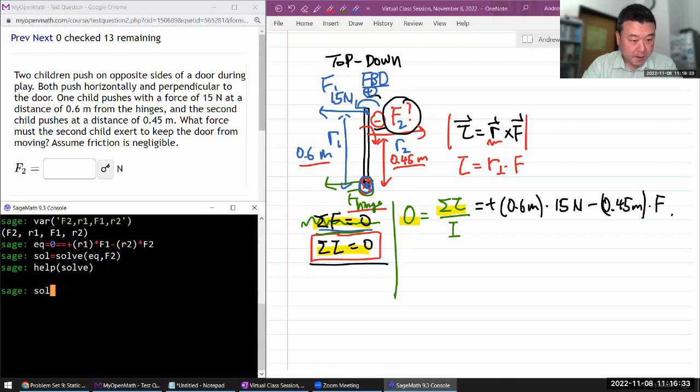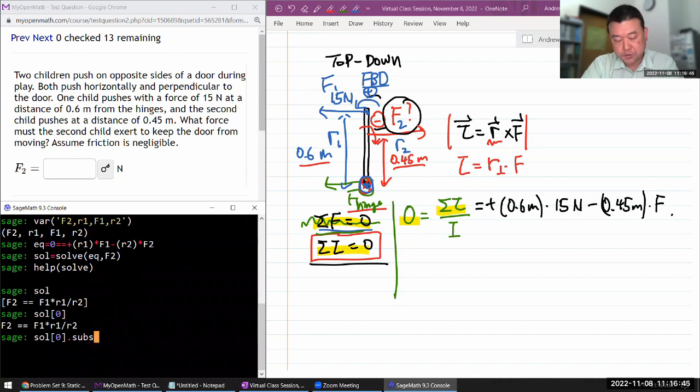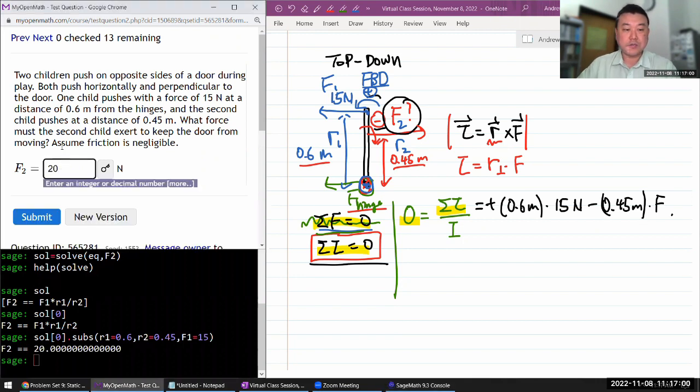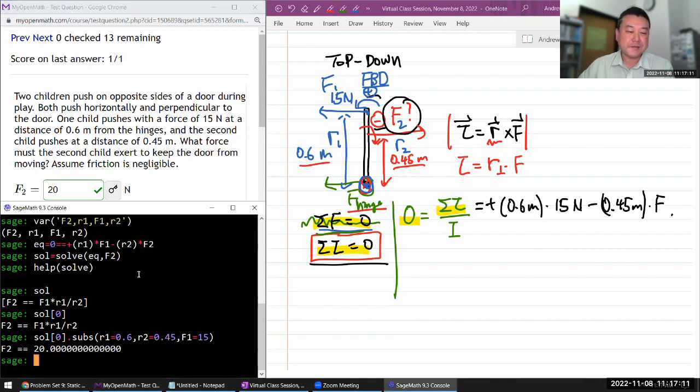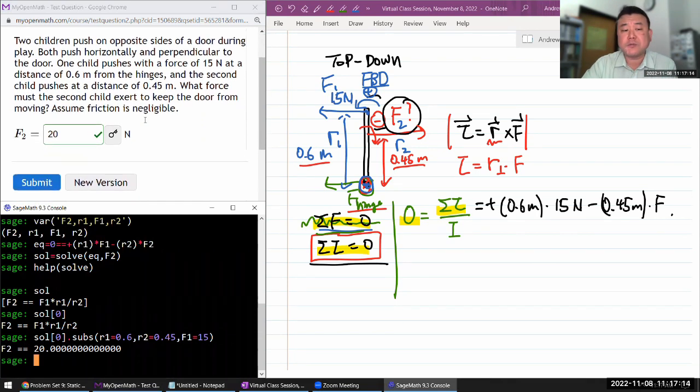So with that, I have solution worked out here. I'm looking at my first element. I need to plug in the values of the things I have. So I need to substitute in R1 is equal to 0.6 meters, R2 is equal to 0.45 meters, and F1 is equal to 15 newtons. Then this should be the answer. 20 newtons should be the force that the second child can exert to keep the door from moving. And by the way, this is simple algebra, but again, this is a demonstration of a tool for questions where the algebra might not be so simple.